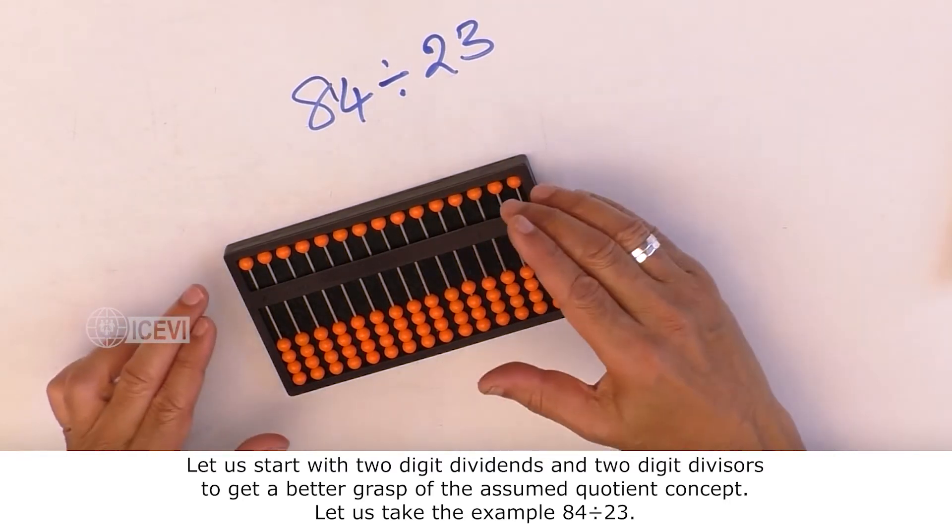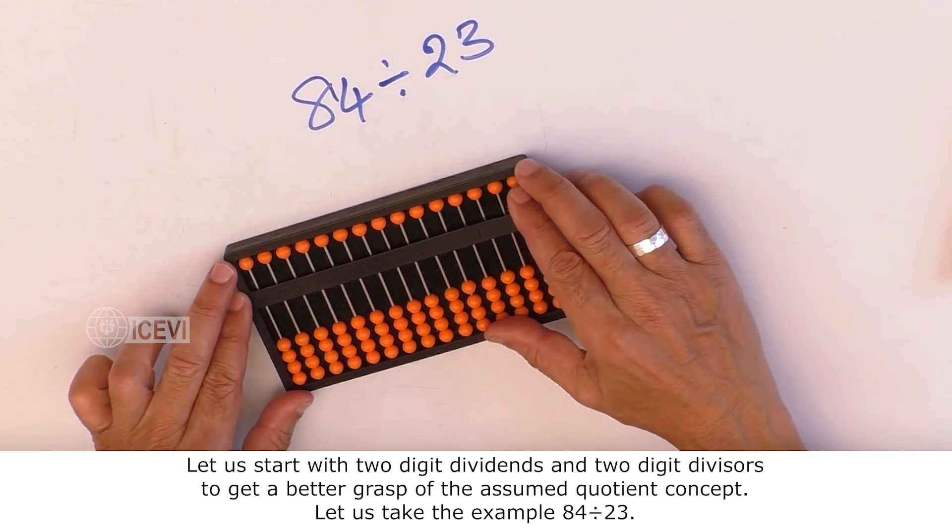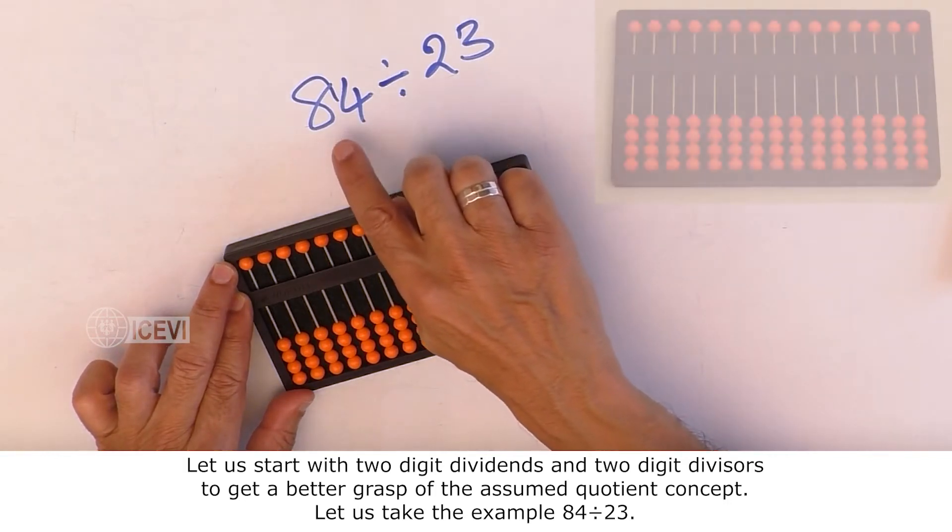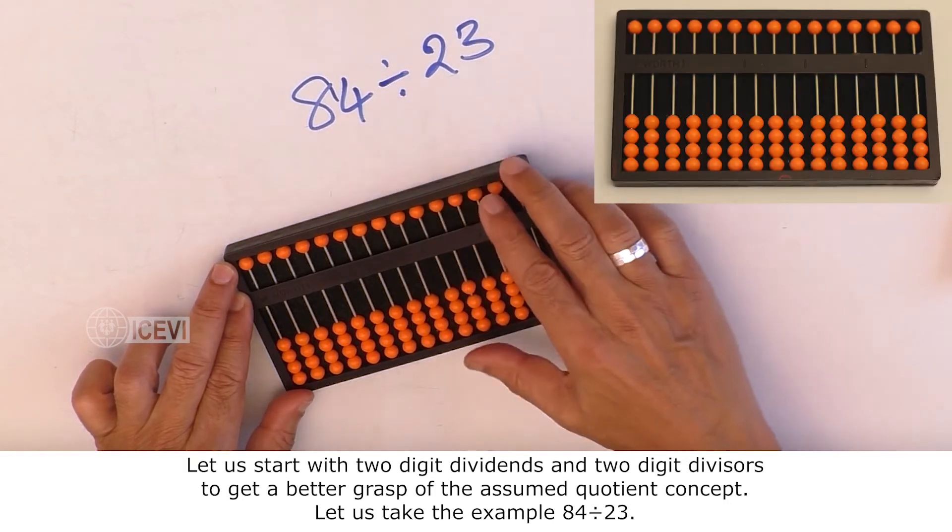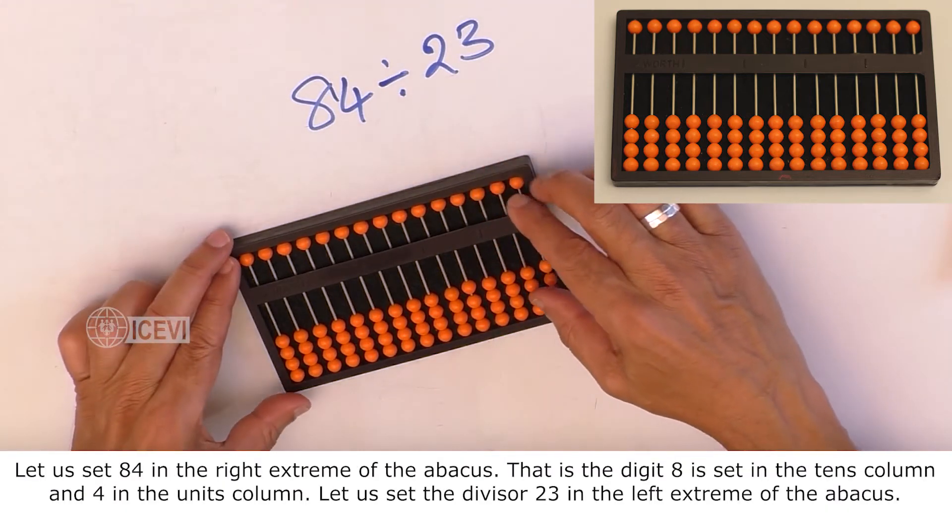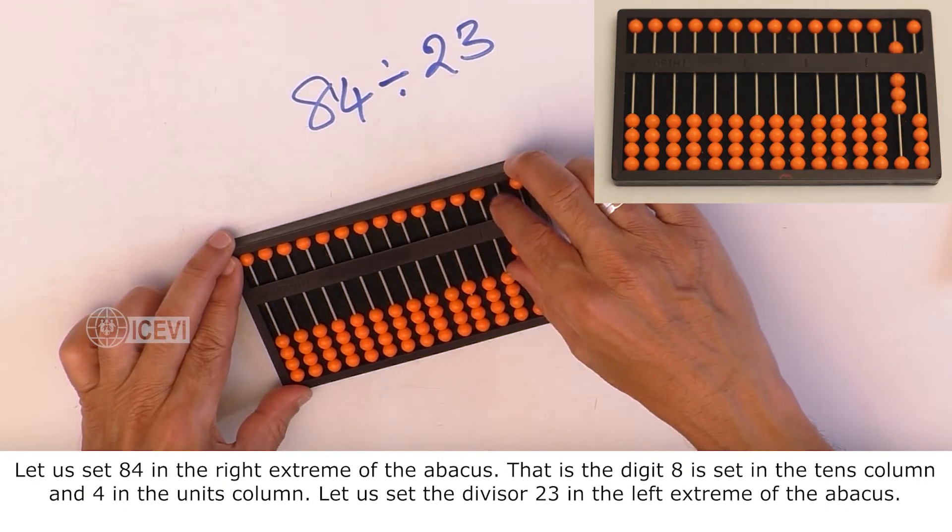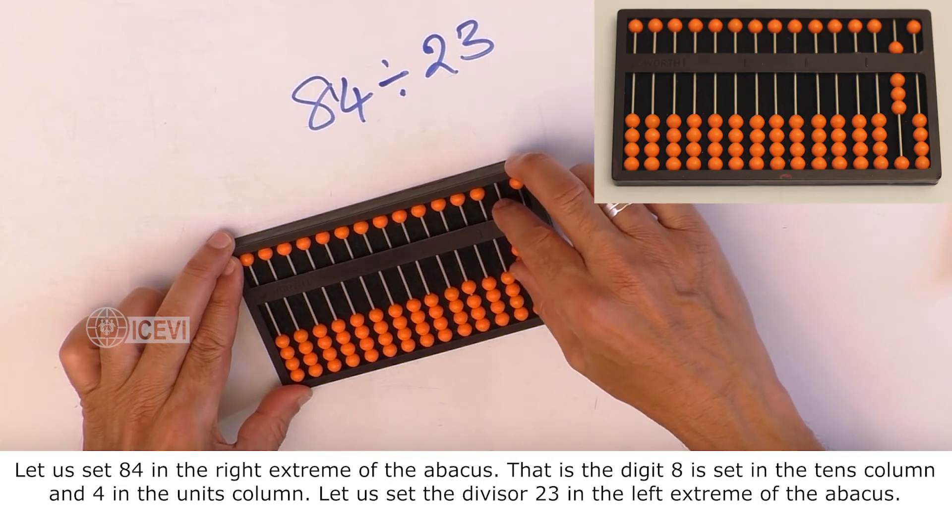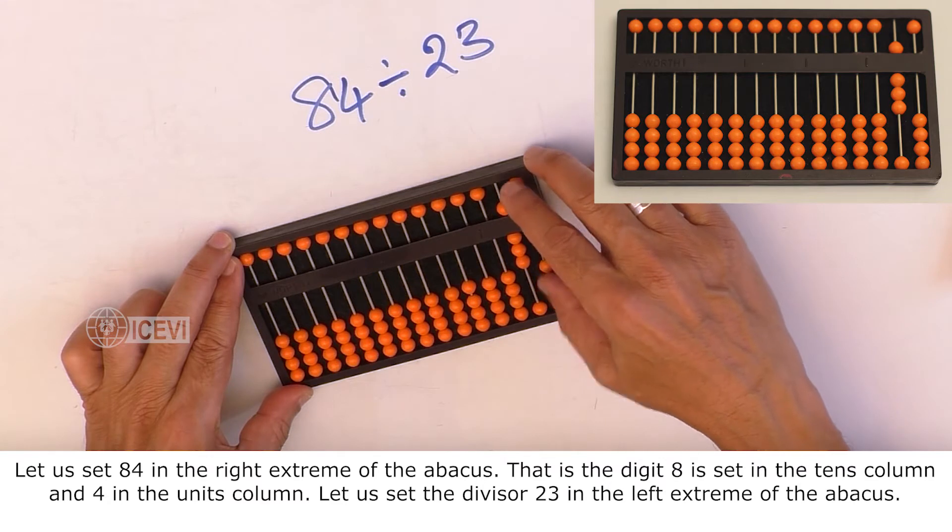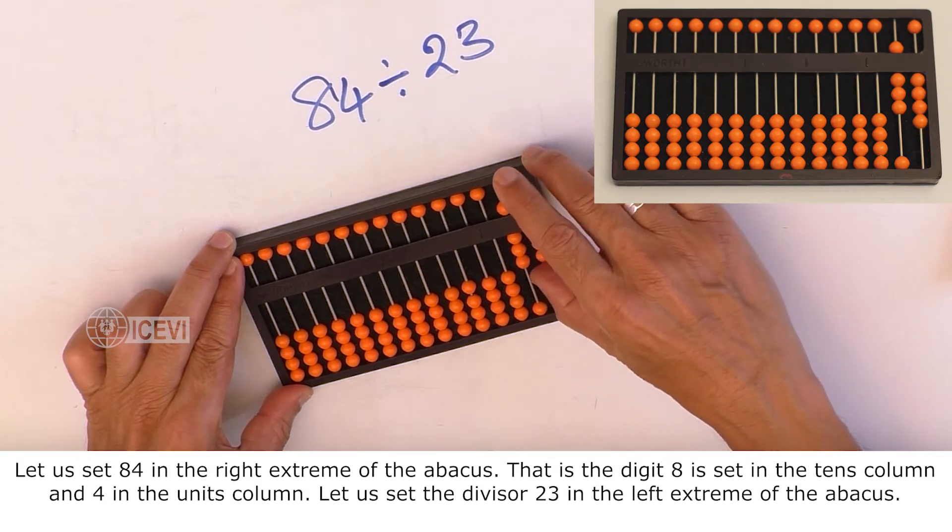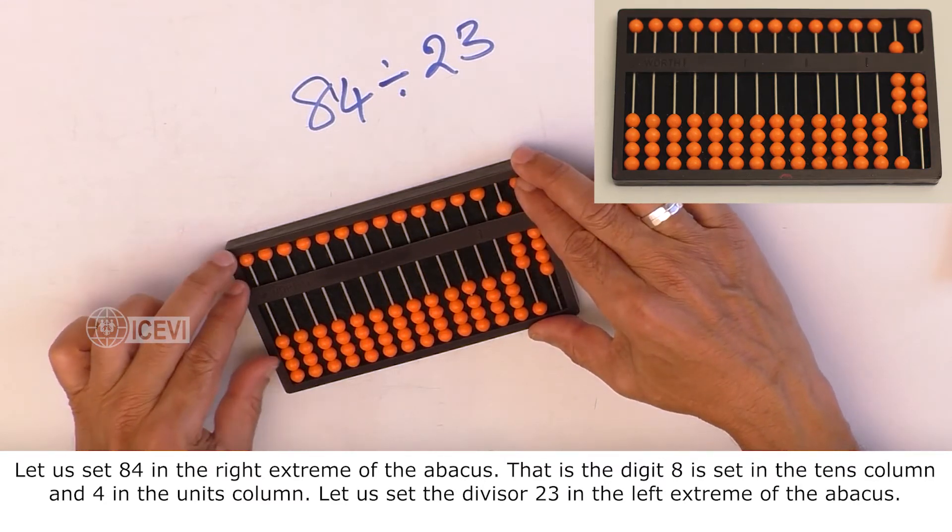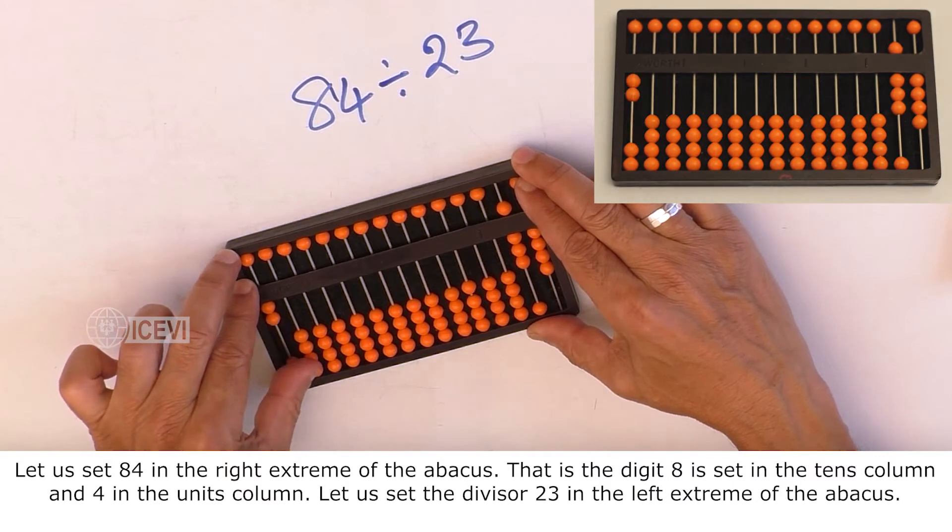Let us take the example 84 divided by 23. Let us set 84 in the right extreme of the abacus. That is, the digit 8 is set in the tens column and 4 in the units column. Let us set the divisor 23 in the left extreme of the abacus.